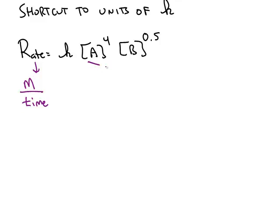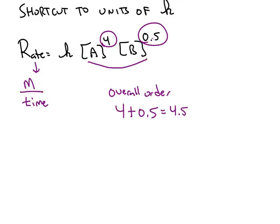If you take the overall order of this reaction, so the overall order in this case is 4 plus 0.5, 4.5. So we're just adding together the two exponents. This reaction is fourth order with respect to a, 0.5 or one-half order with respect to b. So the overall order is 4.5.